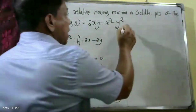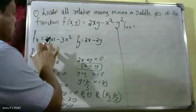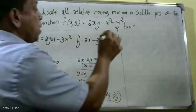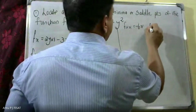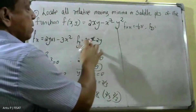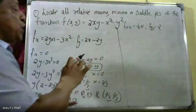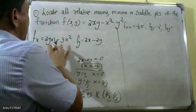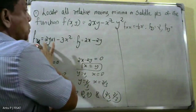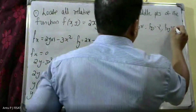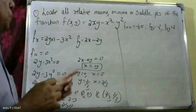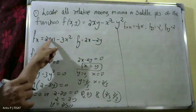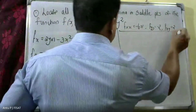Now calculate the second-order partial derivatives. fxx: partially differentiating fx with respect to x gives minus 6x. fyy: partially differentiating fy with respect to y gives minus 2. fxy: partially differentiating fx with respect to y gives 2.